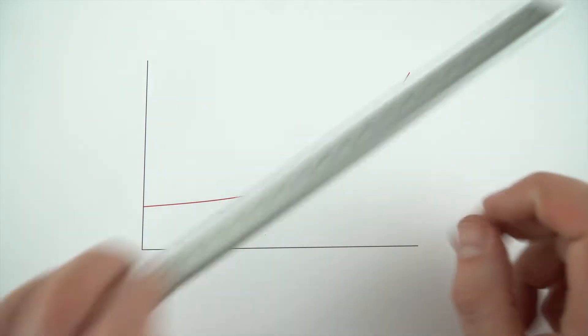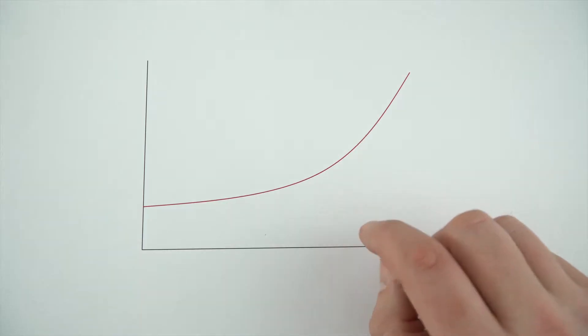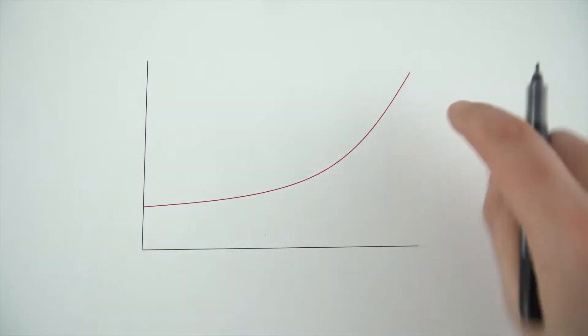Now to work out the gradient at a particular point, what you need to do is draw on a tangent. Now a tangent is basically a line that just meets and glances off that curve.